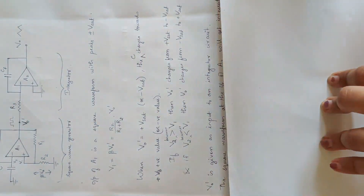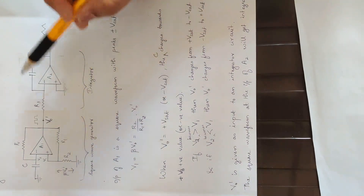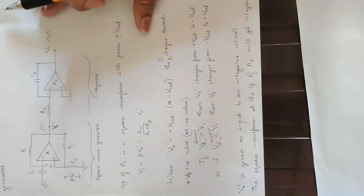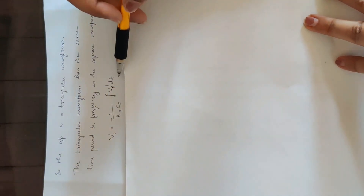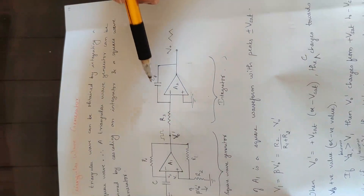This is the square wave form from the square wave generator. Now V0' is given as input to an integrator circuit. At the input of A2, the square wave form gets integrated to produce a triangular wave form. The triangular wave form has the same time period and frequency as the square wave form. This is the integral of V0' dt.